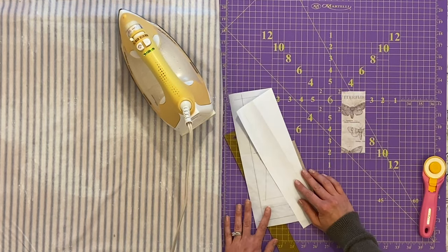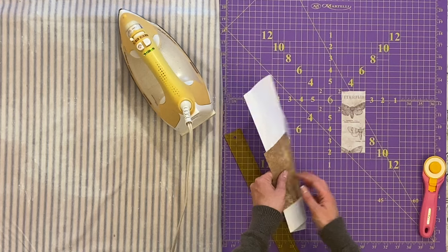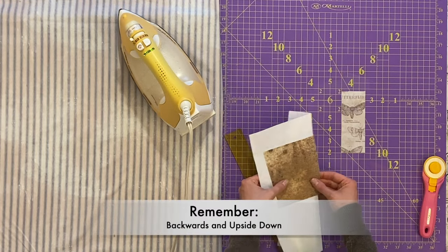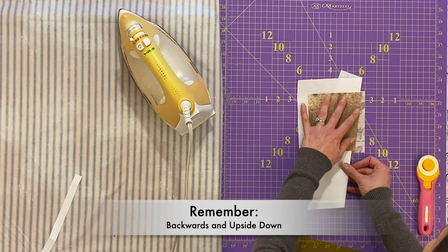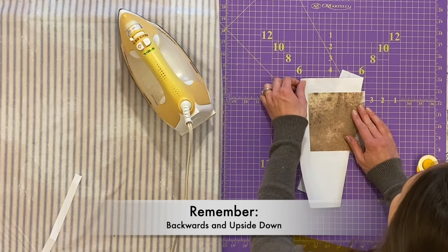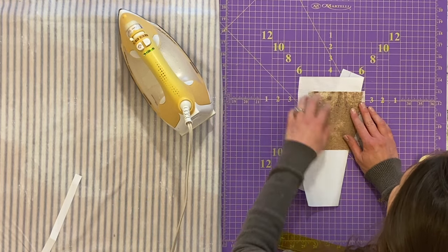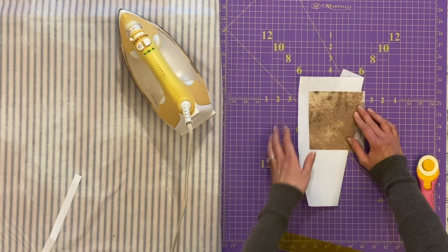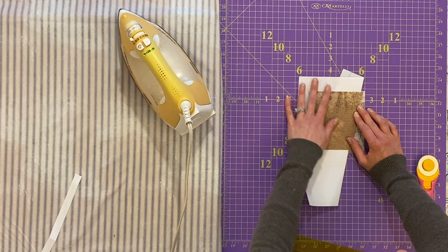We're going to take our template and we are going to turn it backwards and upside down. Now remember everything needs to stay straight in the lines on your mat so the top line of our template also needs to stay straight as well. This is where we're going to cut the angle to match the template.